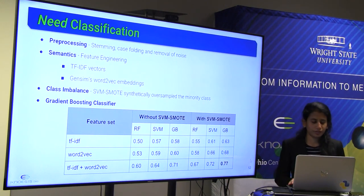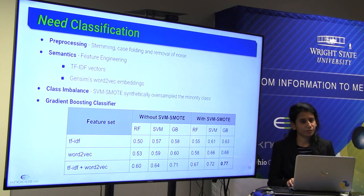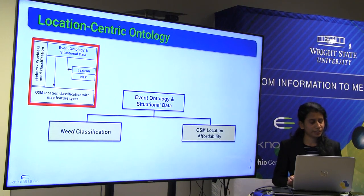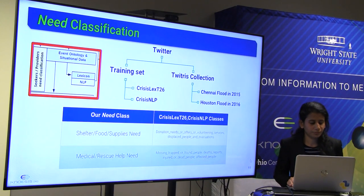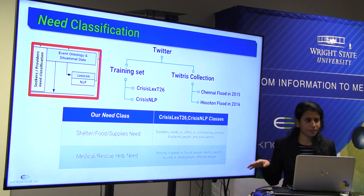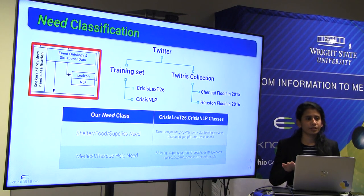This F-score was still not good enough, so we went further to design our location-centric ontology, which has two modules: one that helps improve need classification, and another that defines OSM location affordability. Our need classes are shelter/food/supplies need and medical/rescue/health need — the minority was shelter/food/supplies need, so we used SMOT to balance the data. It is a binary classification.